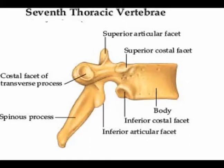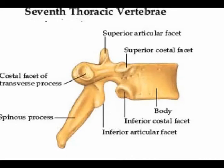T5 through T8 tend to be the most typical in that they contain features present in all thoracic vertebrae. Three atypical thoracic vertebrae exist: T1, T11, and T12.